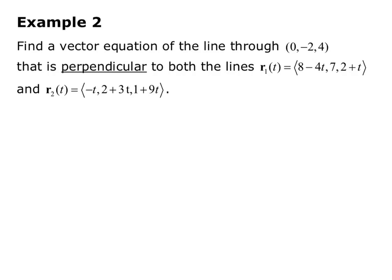Example 2 asks us to find a vector equation of the line through the point 0, negative 2, 4, that is perpendicular to both the lines R1 of t equals the vector 8 minus 4t, 7, 2 plus t, and R2 of t equals the vector negative t, 2 plus 3t, 1 plus 9t. So we have these two vectors, and we want to get direction vectors. So V1 for R1 of t, the direction vector is the numbers attached to the t values, so negative 4, 0, and 1. So it's just the coefficients of t. For R2, my direction vector is V2 equals the vector negative 1, 3, 9. So again, just the coefficients of t.